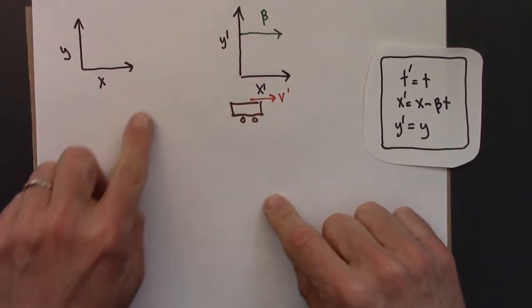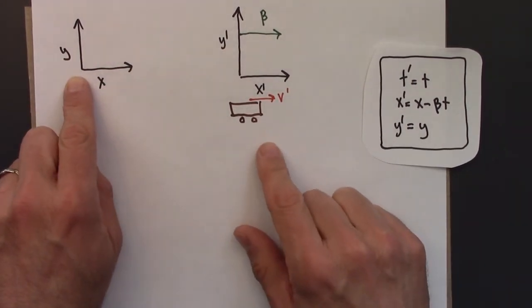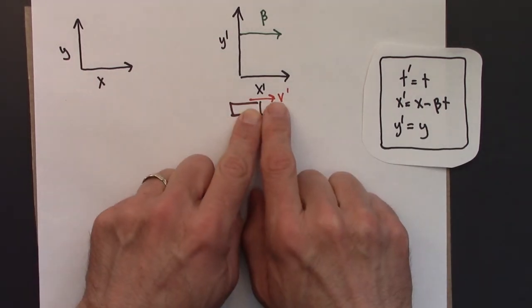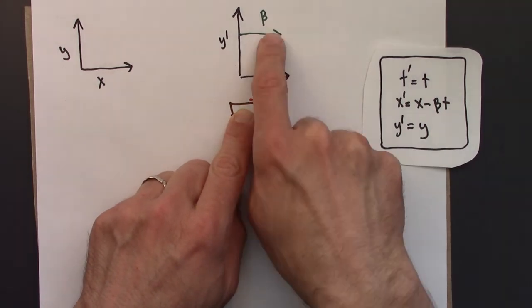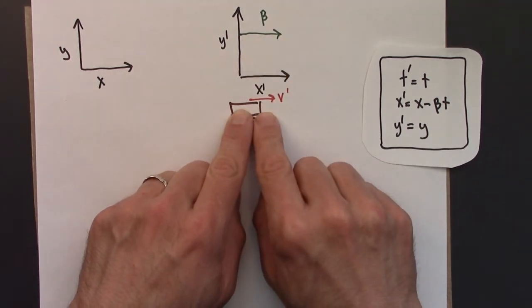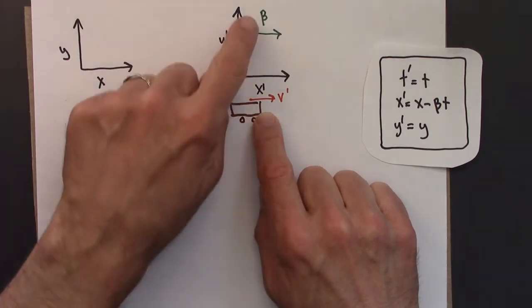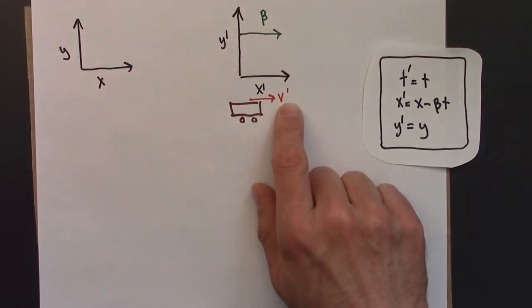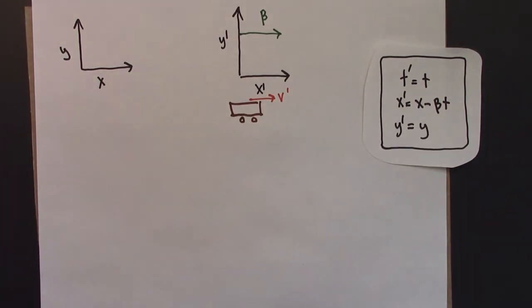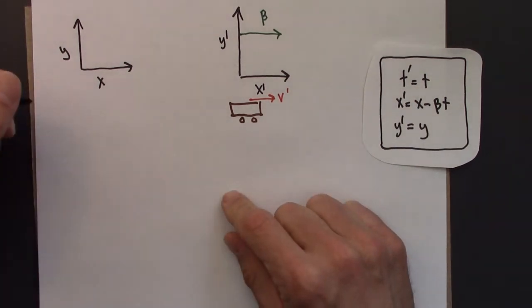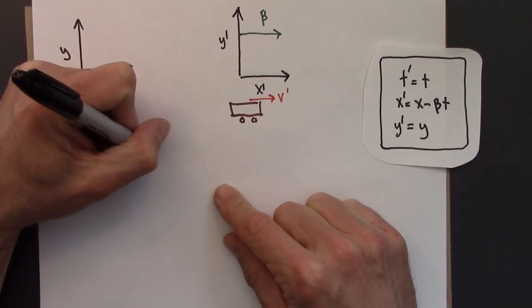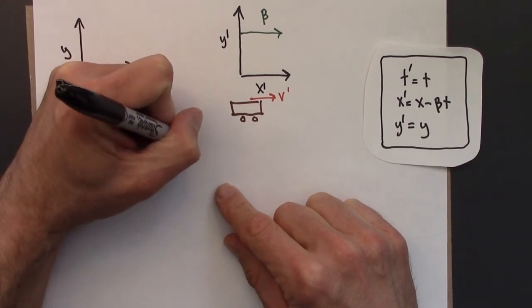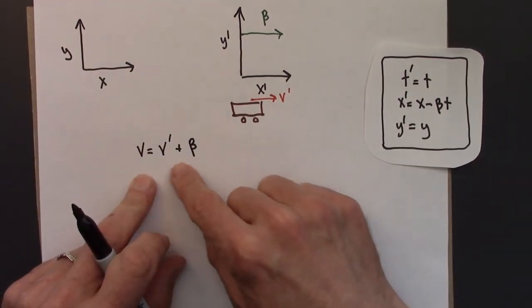If we're on the ground watching the train go by, what speed would we see? We would see the speed v-prime plus the speed beta — it would be going even faster to us. We add together the speed of the train, beta, and the speed of the thrown ball. In other words, v equals v-prime plus beta.